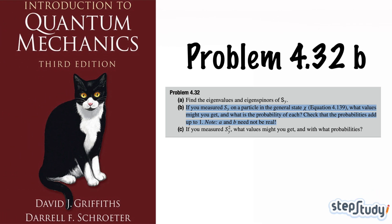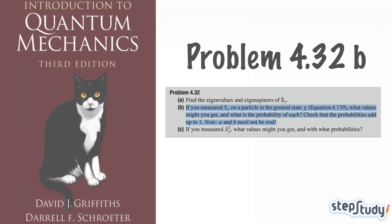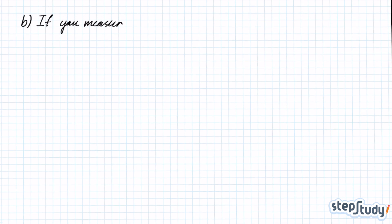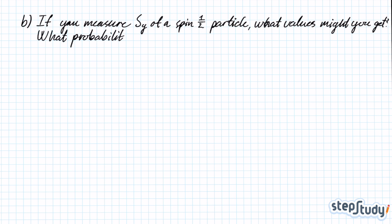We're solving problem 432b in Griffith's Introduction to Quantum Mechanics, trying to figure out what you might get if you try to measure the spin in the y-direction and what the probabilities are of getting each of those outcomes.